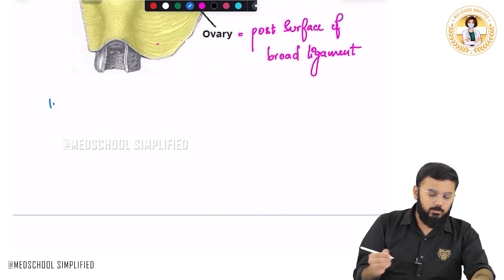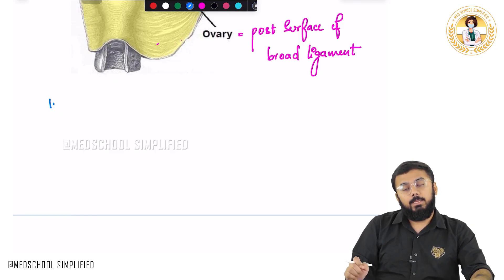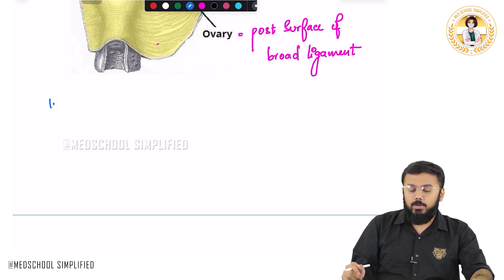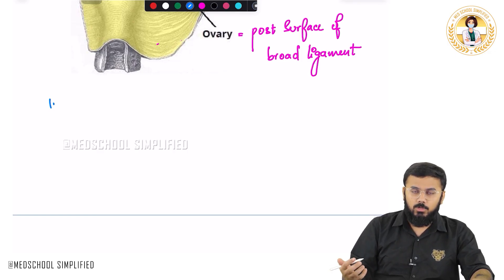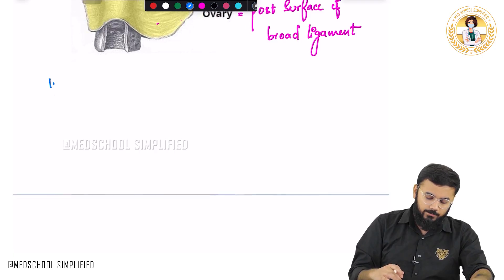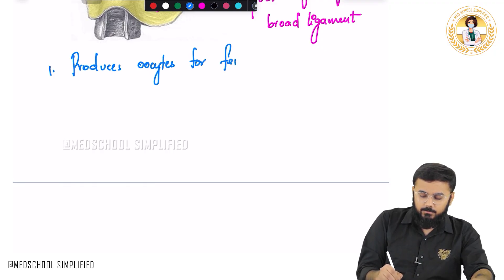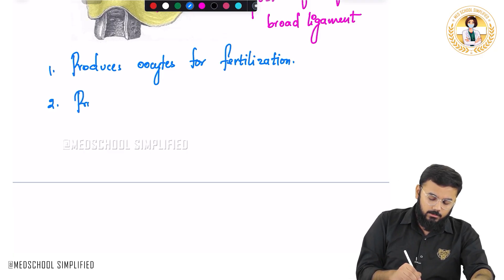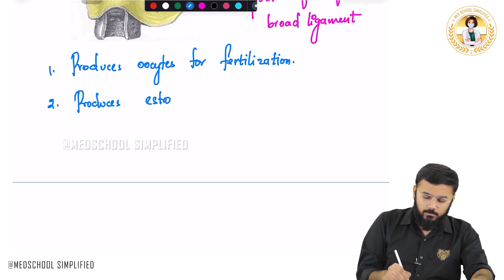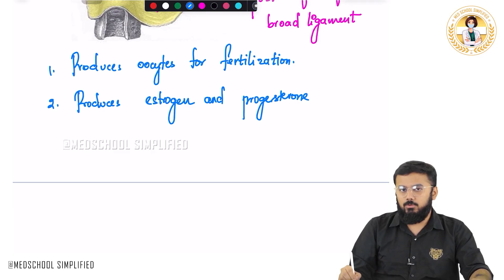Now if you list out the different kinds of functions of the ovaries: the first important function is that ovaries produce oocytes in preparation for fertilization. Second important thing, ovaries are also responsible to release some hormones like estrogen as well as progesterone. So these are the two main functions — it produces oocytes for fertilization, and it produces estrogen as well as progesterone.